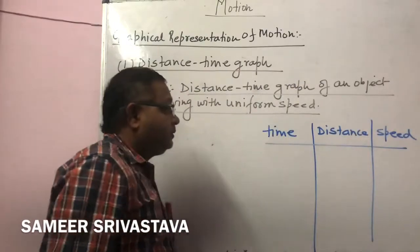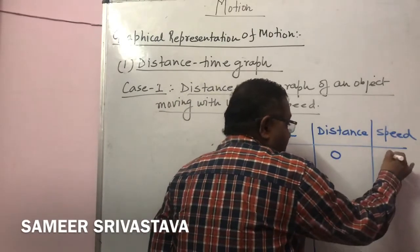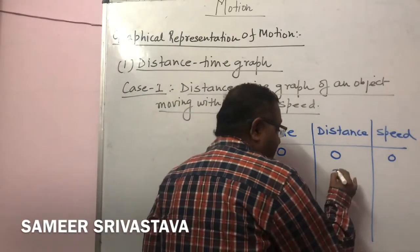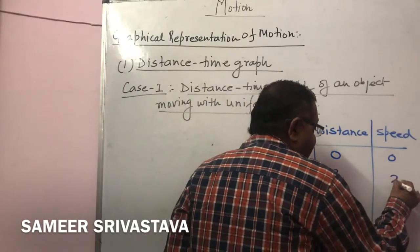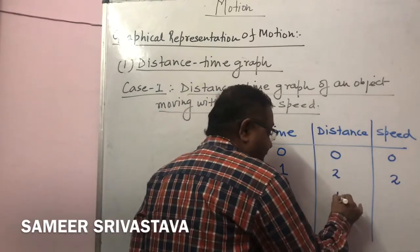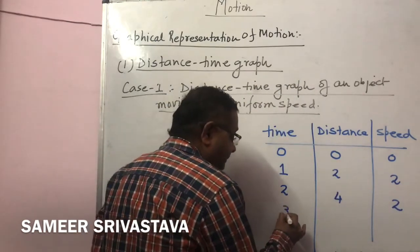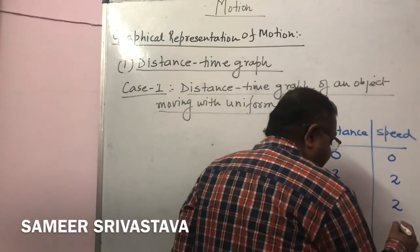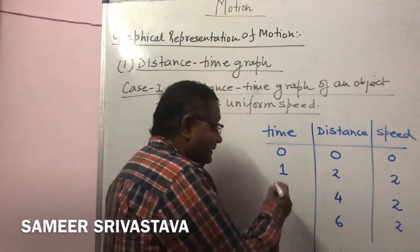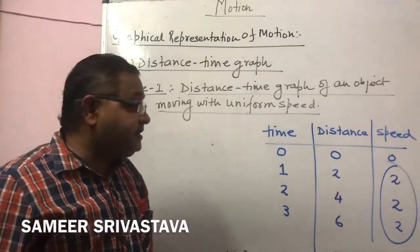When time is 0, distance is 0, speed is 0. When time is 1, distance is 2, speed is 2. When time is 2, distance is 4, speed is again 2. When time is 3, distance is 6, speed is again 2. From this table it is clear that with respect to time, distance will change, but the speed is constant — speed is uniform. This is the case when we want to make a distance-time graph of an object with uniform speed.